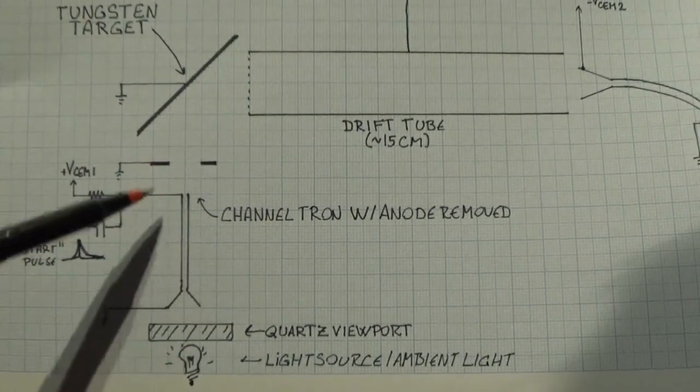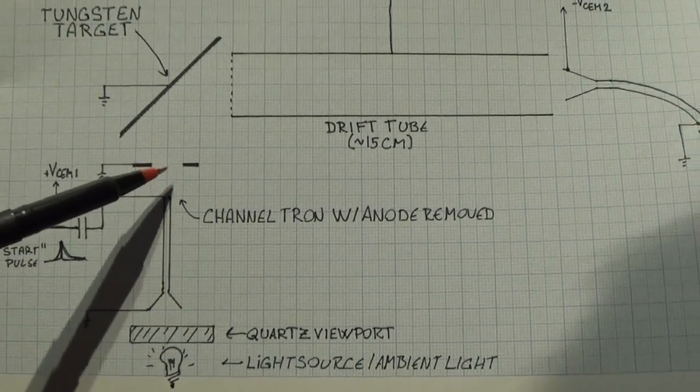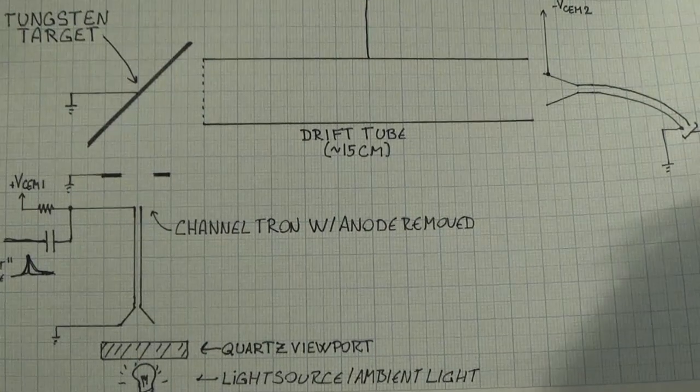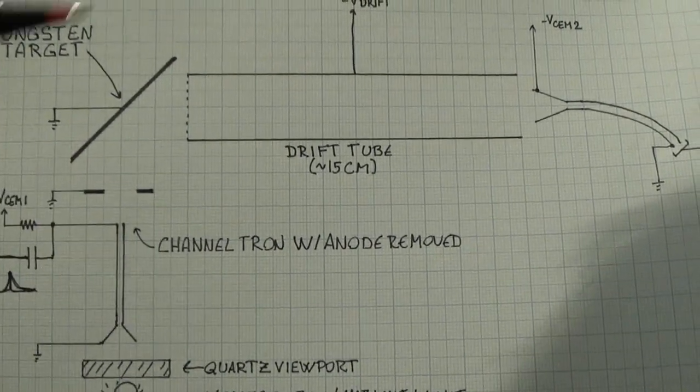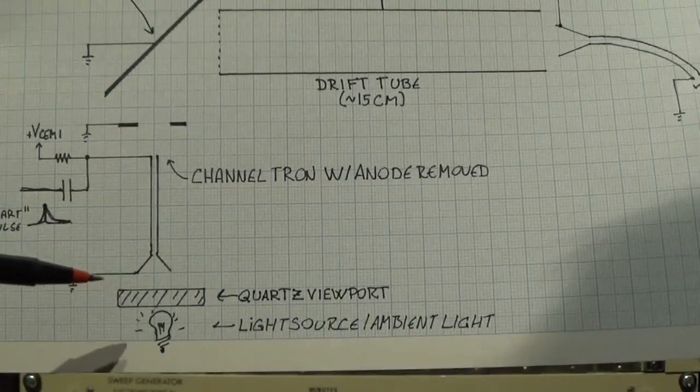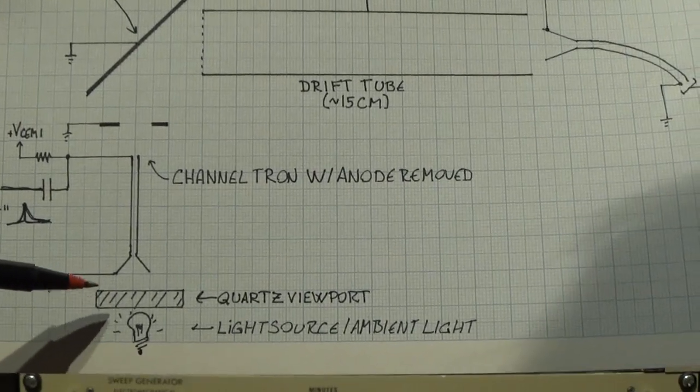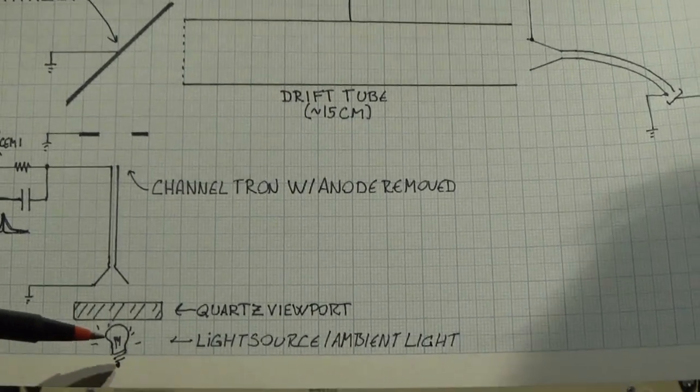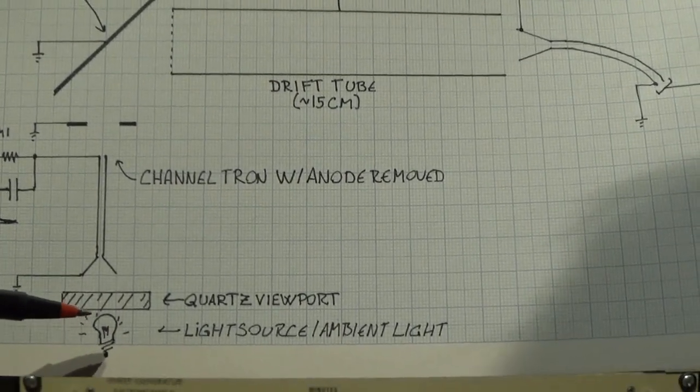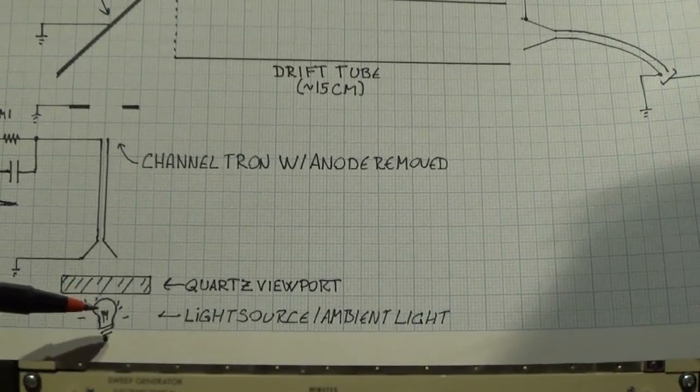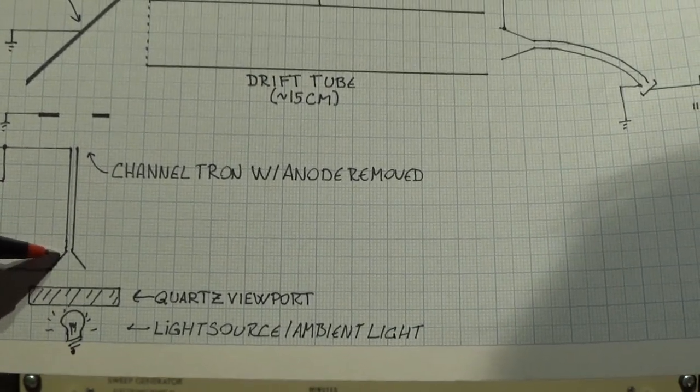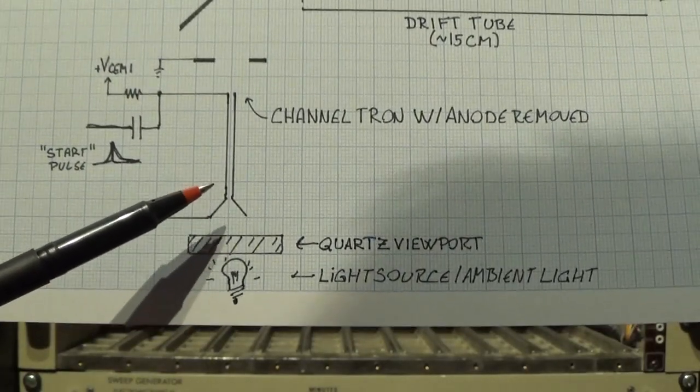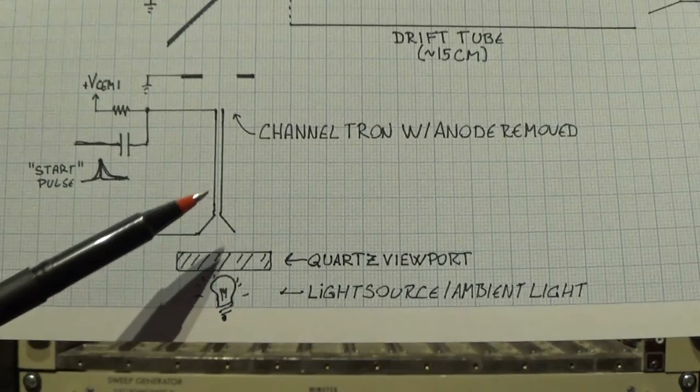We have a channel electron multiplier here with the anode removed. So this is just an open tube and this is just set up with the bias that it's usually to create a bunch of electrons. And here we have a glass window, a UV transparent glass window. I have bought a quartz window for this occasion. You'll have some light source outside, maybe just ambient light, maybe a small light source. This will just shine UV photons into the electron multiplier. It is also sensitive to UV photons, not as much as electrons, but it is.